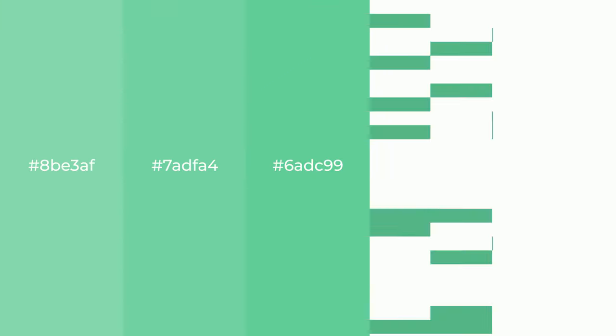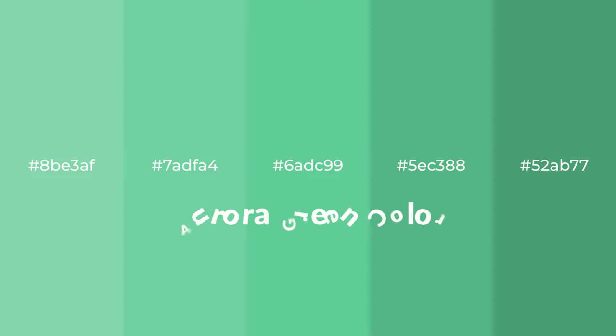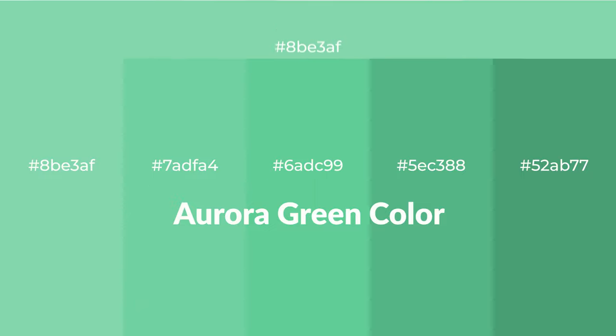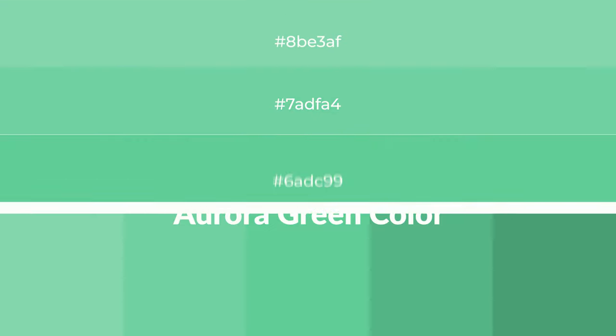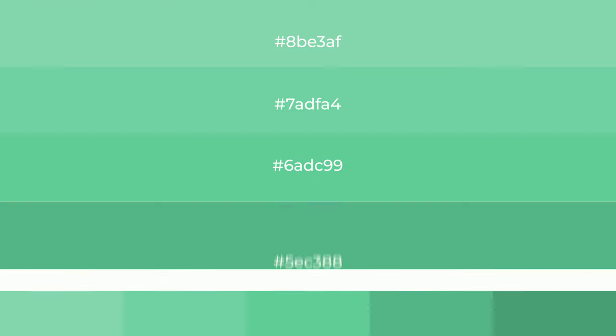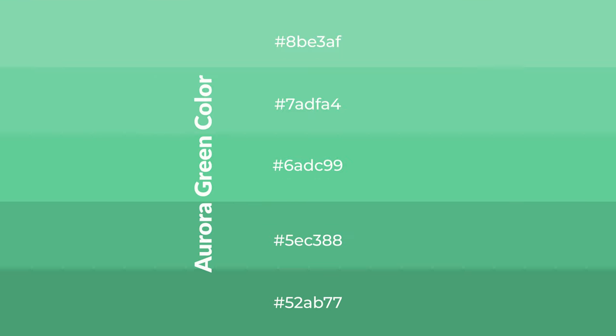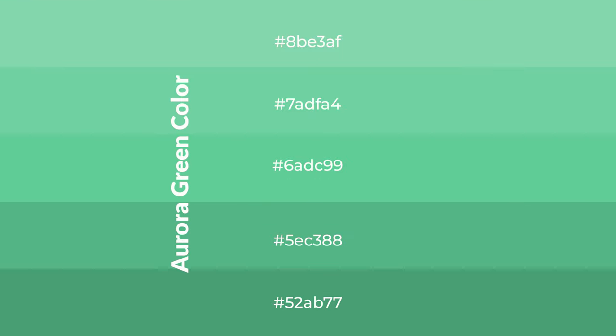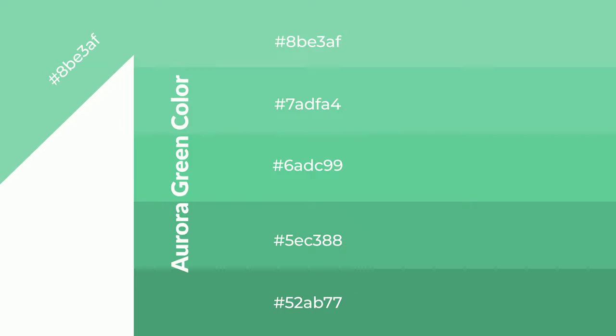Cool shades of aurora green color with green hue for your next project. To generate tints of a color, we add white to the color — tints create light and exquisite emotions. To generate shades of a color, we add black to the color, and it is used in patterns, 3D effects, and layers. Shades create depth and drama.